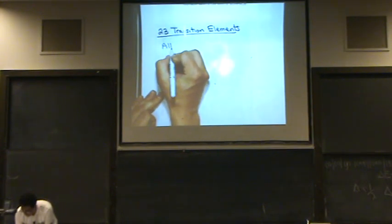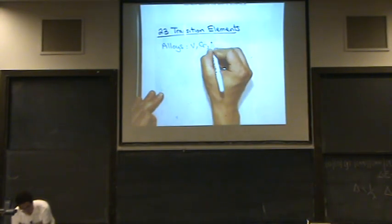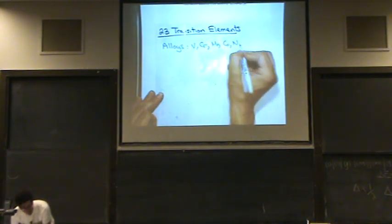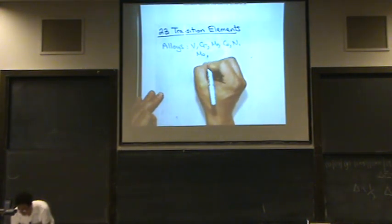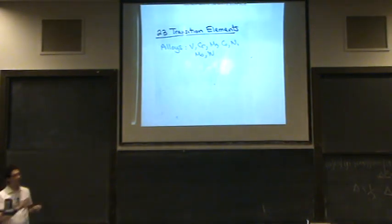Transition elements or metals are used in alloys. Here's some examples: Vanadium, chromium, manganese, cobalt, nickel, moly, tungsten. They're all potential alloys. And if you don't know about alloys, alloys depend on what metal you put into another metal.